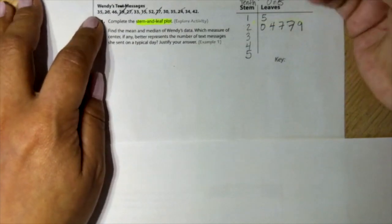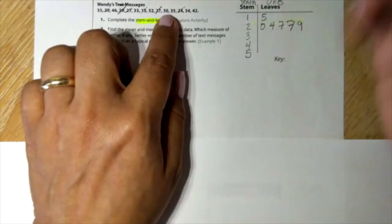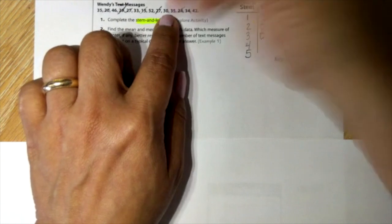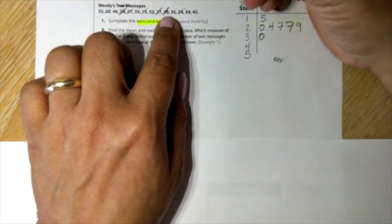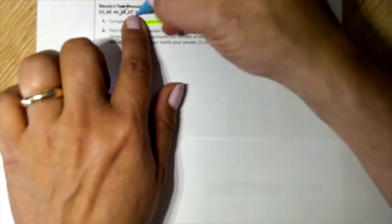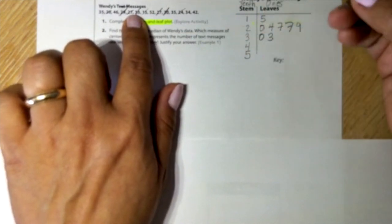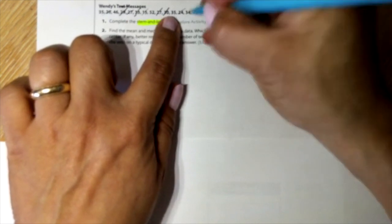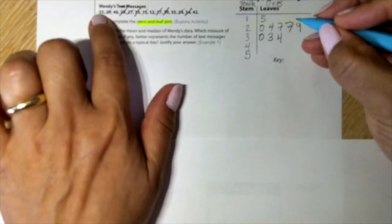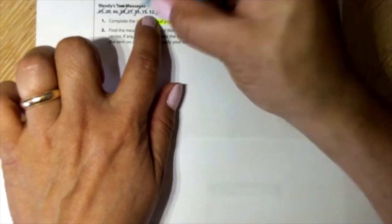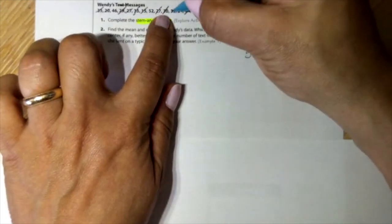Now I'm going to go into the 30s. 30 is 30, so I'm going to start with the zero. Then we have 33, three and three is 33. And then we have 34, 35, cross it out. Then we have another 35.